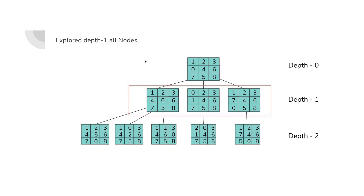We have already explored depth zero and found out there are three possible moves. Now we will find out the possible moves of this node. This node could be moved to top, right, left, and bottom, but we have only explored three nodes — not four — because if you move it to the left you will be reaching the initial state again. So we are only using unique states. I have moved it to bottom, top, and right, exploring all possible states except the one that brings us back to the initial state.